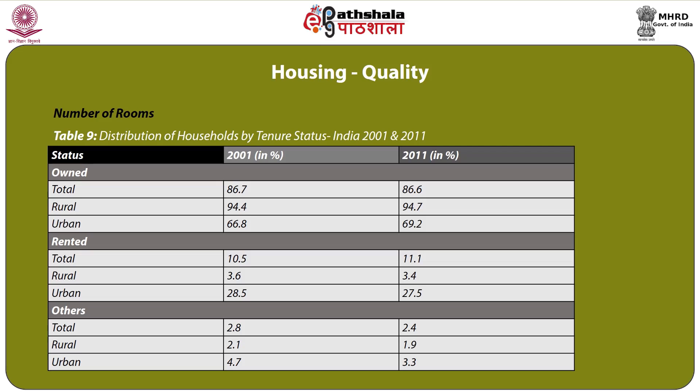Table 9 covers distribution of households by tenure status in 2001 and 2011, divided into owned, rented, and others. In 2001, 86.7 percent of households were owned, while in 2011 the percentage was 86.6 percent. Rented households totaled 10.5 percent in 2001 and 11.1 percent in 2011. Owned households are more prevalent in rural areas, whereas rented households are more common in urban areas — 28.5 percent in 2001 to 27.5 percent in 2011.